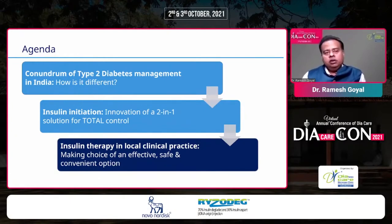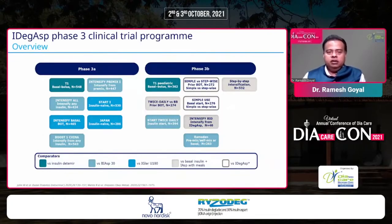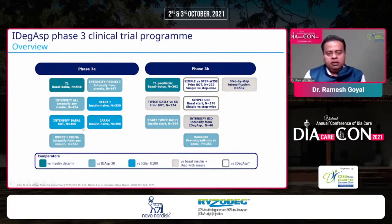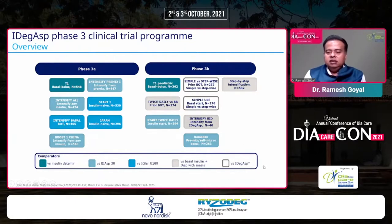I will quote the RCTs of IDegAsp. The phase three clinical trial program has extensively studied IDegAsp in both type 1 and type 2 diabetic patients. It has been compared with insulin detemir, biphasic insulin aspart 30, insulin glargine U100, basal insulin, insulin aspart, and basal-bolus therapy. It has also been studied as an insulin initiation option after OAD failure — a robust phase three trial program for IDegAsp.